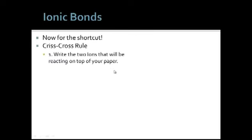And so now for that shortcut, it's what's called the criss-cross rule. So first thing you want to do is you're going to want to write the two ions that you will be reacting at the top of your paper. So if we go back to that same example problem of aluminum and sulfur reacting, I could write aluminum at the top of my paper. And because I know aluminum is in group 13, I know that it's going to give away its three valence shell electrons to produce a 3+ charge.